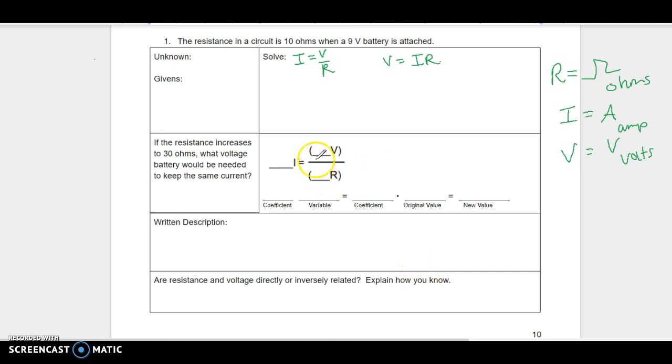All right, so in this one, the givens are going to be the resistance is 10 ohms, and the voltage is 9 volts. So then the missing thing is the current. That doesn't ask for it, which is kind of random. So we're going to go ahead and use it in this form for sure, because it's already solved out for current. So V is 9 volts divided by 10 ohms. And so then the current is going to be 0.9 amps. Because a volt over an ohm makes an amp. So first thing you're going to do is solve out for the current.